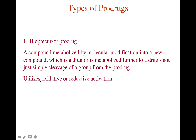A bioprecursor prodrug uses oxidative or reductive activation — not enzymatic cleavage using esterase and amidase enzymes. Oxidative activation involves adding to the molecule — for example, additional carbons added to a specific compound through functional group modification. Reductive activation involves reducing certain functional groups, such as removing a carbonyl group through metabolic interaction. These are the two main activation processes used with bioprecursor prodrugs.